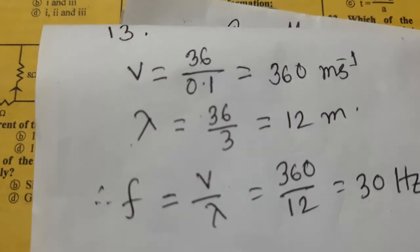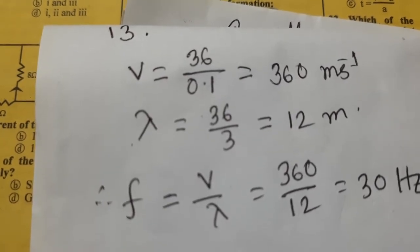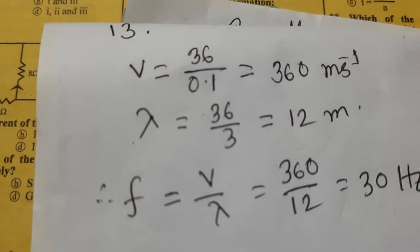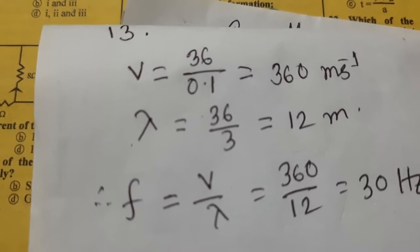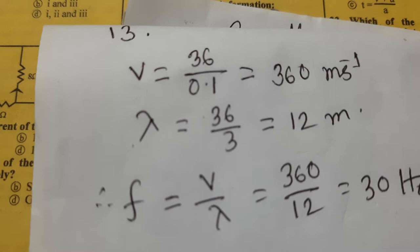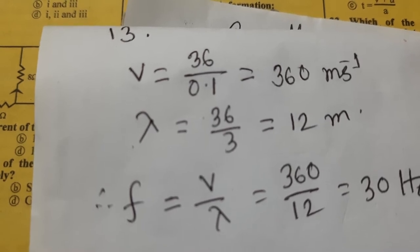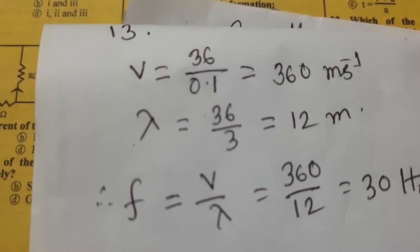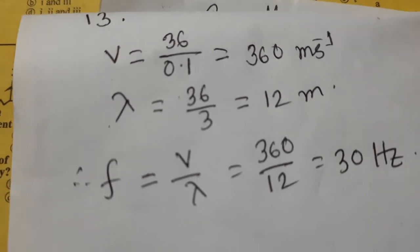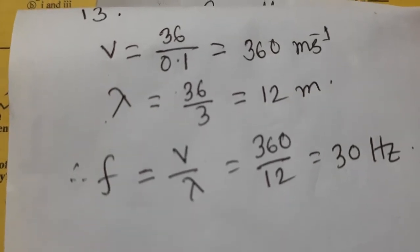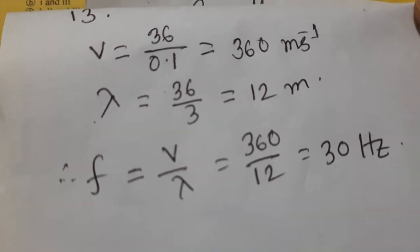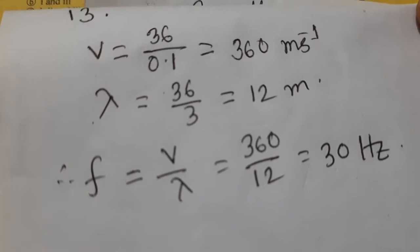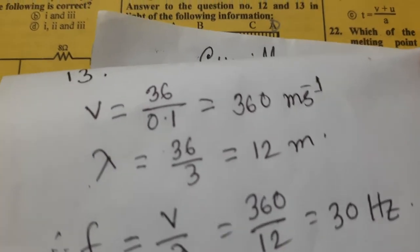The explanation: v = s/t, total distance s = 36 m, time = 0.1 s, so v = 36/0.1 = 360 m/s. Lambda = 36/3 = 12 m. Using v = f × λ, f = 360/12 = 30 Hz. So the frequency is 30 hertz — option D.